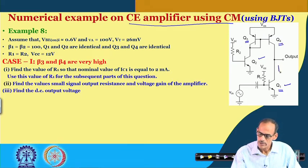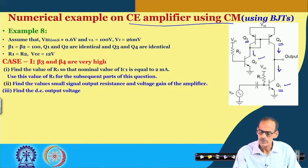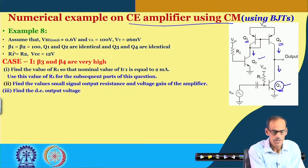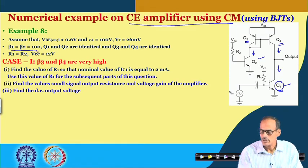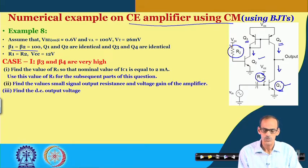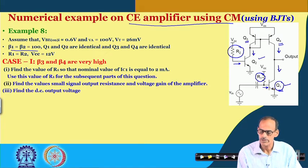To get the collector current of transistor 1 and collector current of transistor 4 equal, we want the current flow through transistor 2 to equal the current flow through transistor 1. Since Q1 and Q2 are identical, having the same beta value of 100, the base bias resistance R1 should be identical to resistor R2, so that the DC base currents here and here are equal.